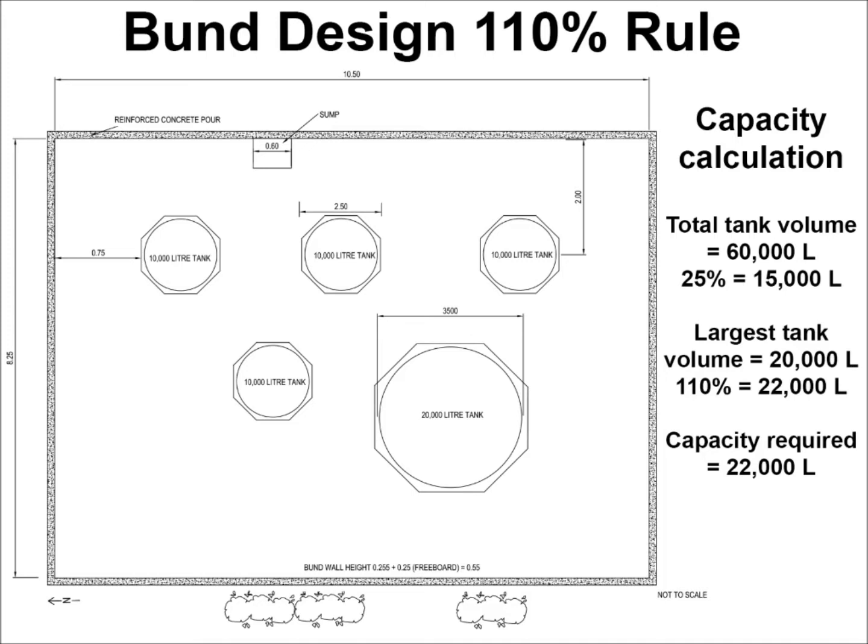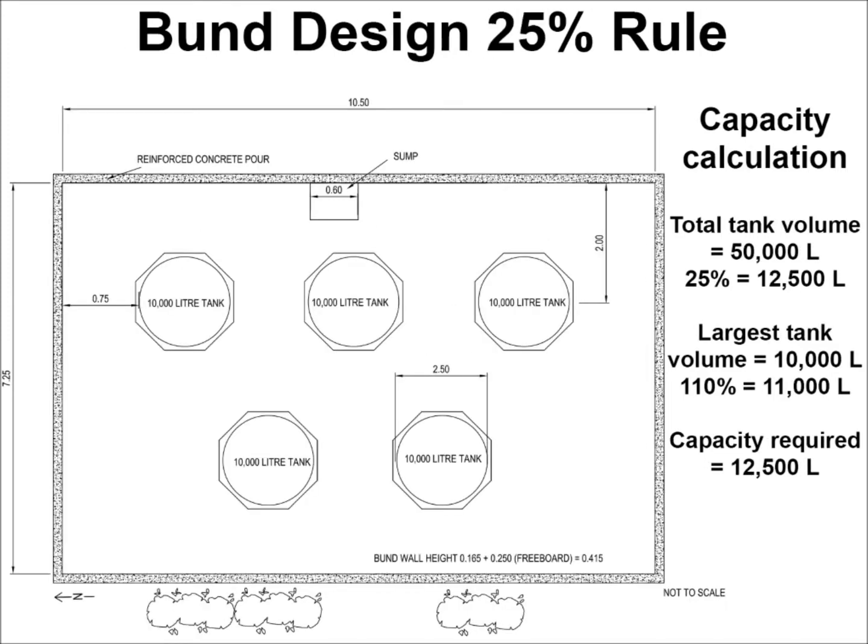In this diagram, the five containers housed in the bund have a total storage of 60,000 litres, with the largest container holding 20,000 litres. Using the 110% rule, the bund would need a capacity of 22,000 litres. Using the 25% rule, the bund would need a capacity of 15,000 litres. Therefore, the higher volume of 22,000 litres is necessary. If we reduce the volume of the largest container to 10,000 litres, the total volume becomes 50,000 litres. Using the 110% rule, the bund would need 11,000 litres, and using the 25% rule, 12,500 litres. Therefore, the higher volume of 12,500 litres is necessary.